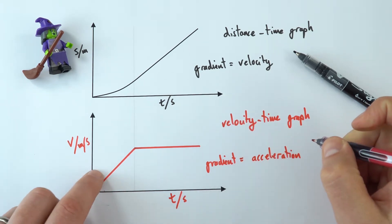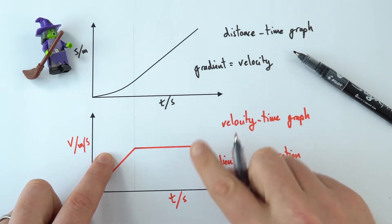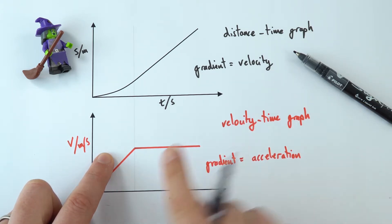And we can see here we've got a positive gradient, so that means we've got a positive acceleration, so something is getting quicker. We could always have a negative acceleration if something slows down. And when you've got a gradient of zero, it means there's no acceleration and a constant speed.